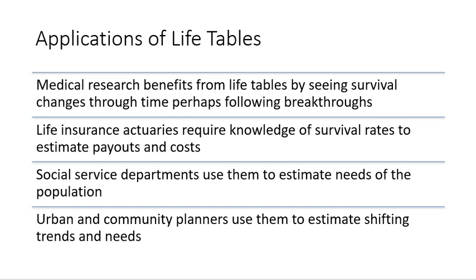When we think about the underlying structure of the life table, we can actually find some additional uses for the same kind of spreadsheet — the 11-column layout. What we do is we swap out the survival rate of individuals with other types of states or conditions that might change.